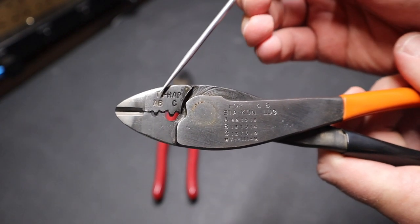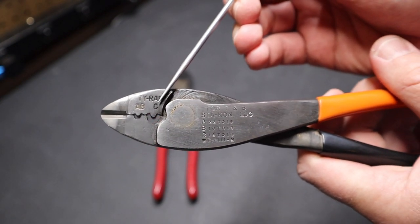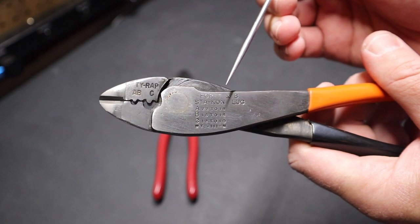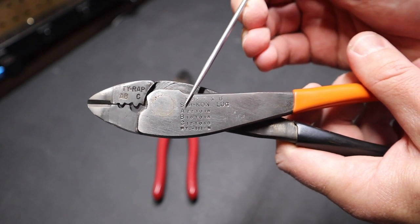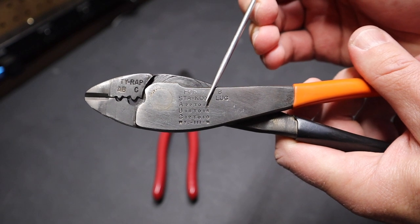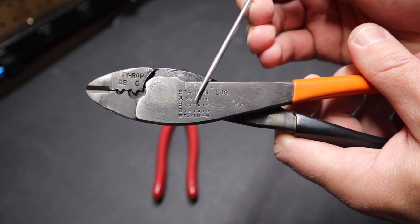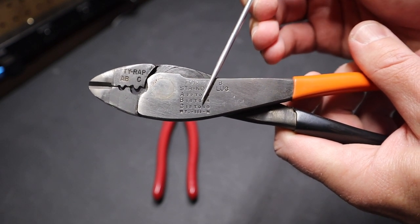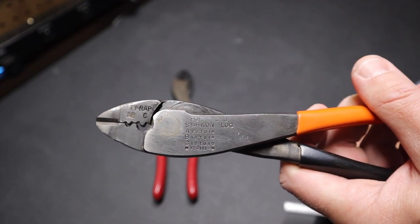You'll see here, they have a label on the side of the tool. They have A, B and C for different parts. And here they define what they do. A part of the crimper can do 18 to 22 gauge. B can do 16 to 14. C can do 12 to 10 gauge. So that's how that's laid out.